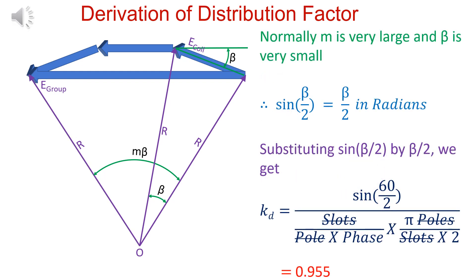When number of coils in a group is very large, KD equals to 0.955.